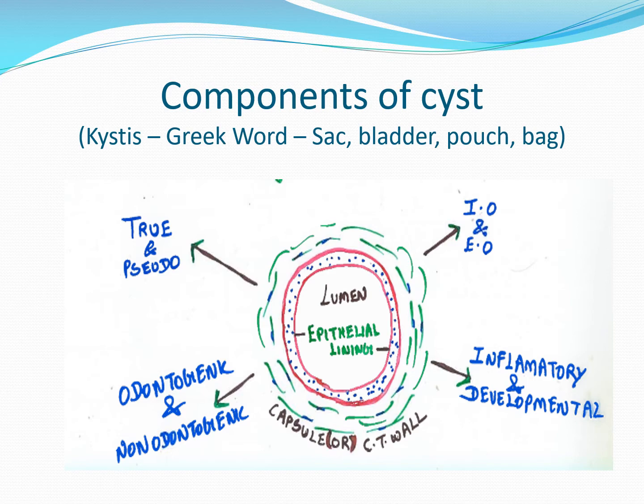The word 'cyst' is derived from the Greek word meaning sack, bladder, or pouch. The main components of a cyst microscopically are: a central lumen or cavity — which is the basic part — lined by epithelium, surrounded by a connective tissue wall. So the main parts are the lumen, epithelial lining, and connective tissue wall. A false cyst lacks the epithelial lining.